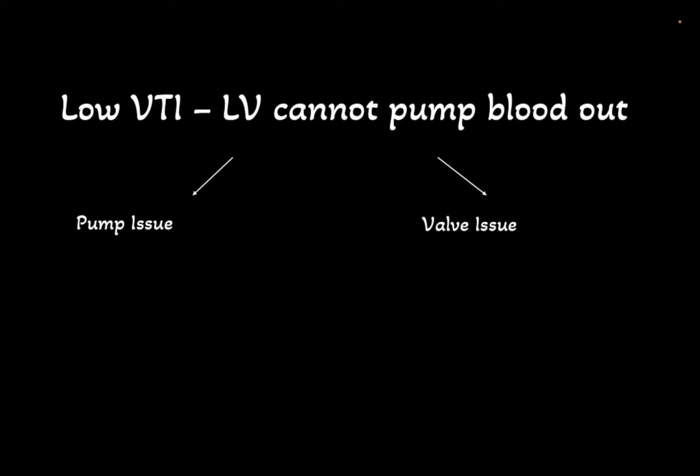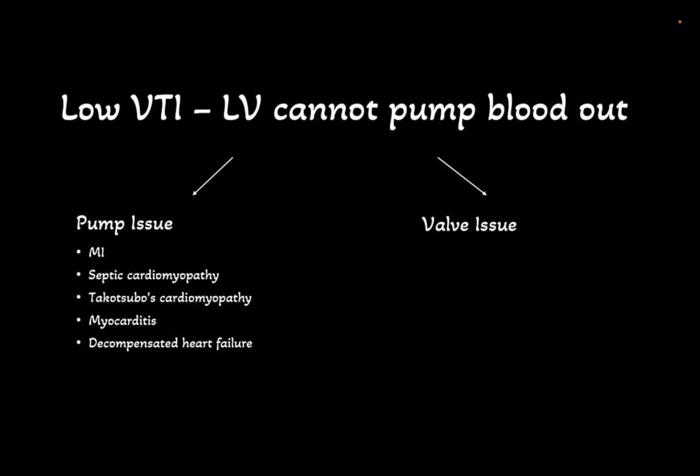Finally, the last cause of a low VTI is the inability of the LV to pump blood out through the aortic valve. These can be broken down into pump issues or valve issues. Any condition that impairs LV systolic function falls under pump issues. These include an MI, septic cardiomyopathy, stress cardiomyopathy such as takotsubo's, and myocarditis. Worsening cardiac function in the context of previous heart failure also leads to a low VTI. Severe MR causes a low VTI as during systole blood travels backward into the left atrium rather than leading through the aortic valve.